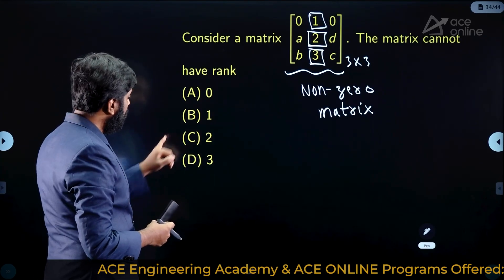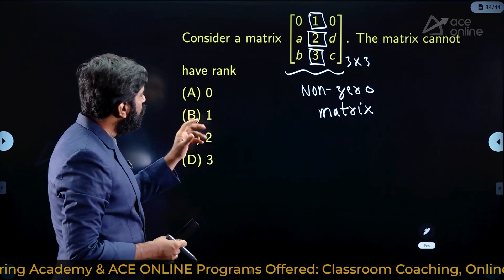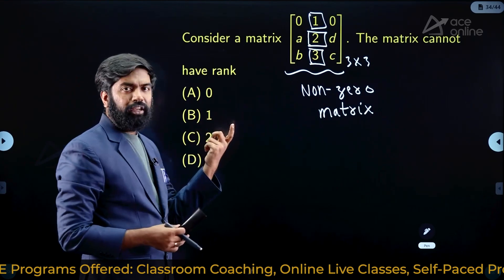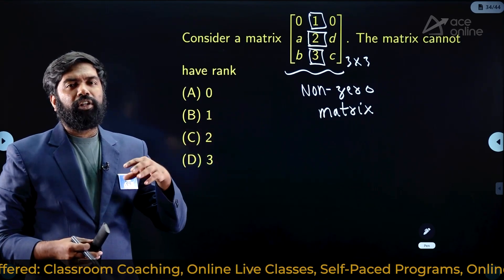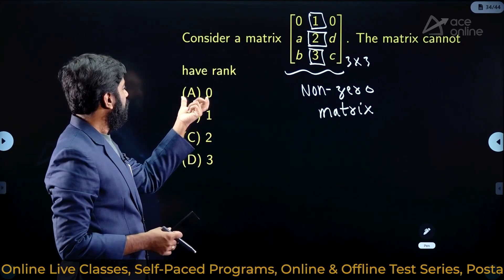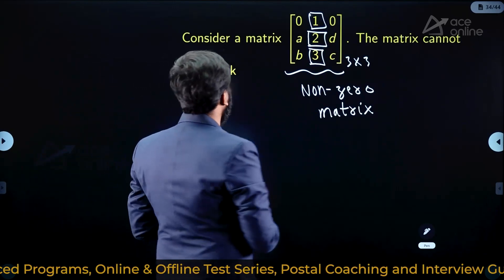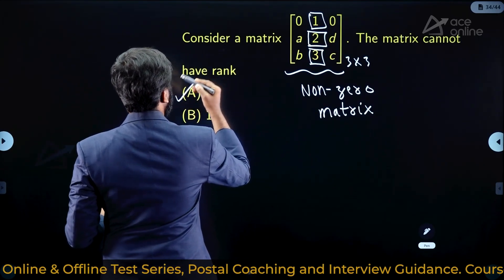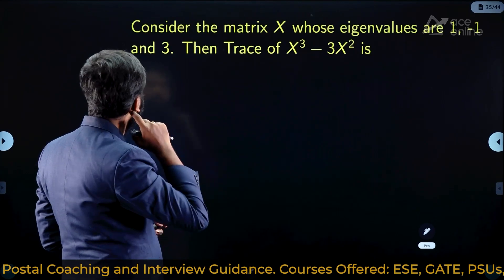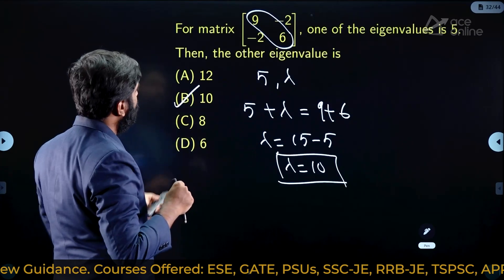A nonzero matrix cannot have rank 0. By choosing different values for a, b, c, d you can vary the rank to be 1, 2, or 3, but it can never be zero. Therefore the answer is that the matrix cannot have rank zero.